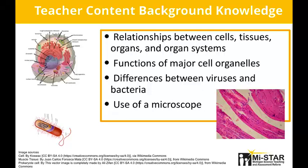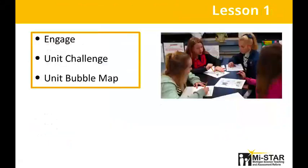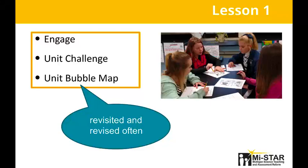We're now going to focus on brief summaries of the lessons that compose Unit 6.2. In common with all MyStar units, the first lesson serves to engage students in our topic — how a mystery pathogen can make people sick. After uncovering students' thoughts and ideas about epidemiology, students are introduced to the unit challenge question and unit challenge. Through the creation of a class unit bubble map, students think about what they need to learn in order to answer and address the question and challenge. The unit bubble map will be revisited and updated during the unit, reflecting the greater understanding students achieve as they progress through each lesson.